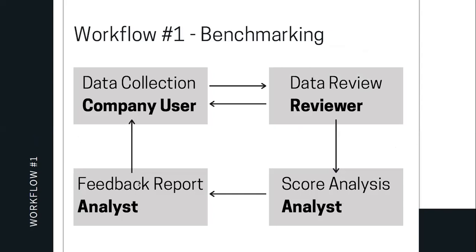There are three workflows. The first is benchmarking, where data collection is done by company users. Then the data is reviewed by a reviewer, and there can be back and forth between data collection and review. Once data is frozen or submitted — typically taking one to three months depending on complexity — it moves to the next process where score analysis is done by the analyst and a feedback report is created. In ProBench, most of this is done automatically. The feedback report is then given back to the company to benchmark them against others.